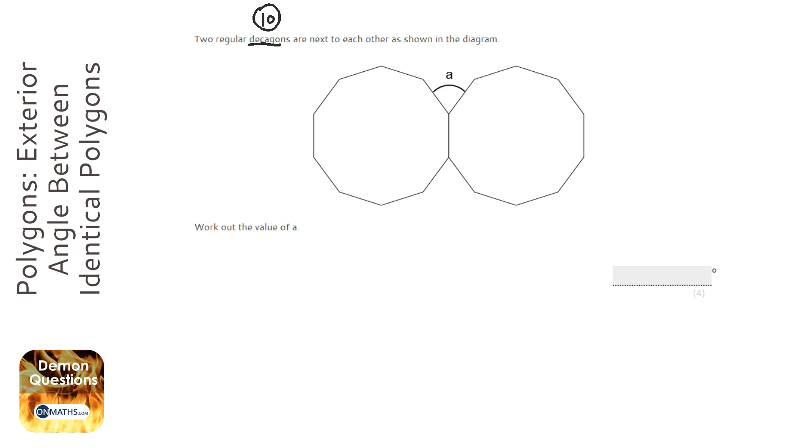A quicker way, especially on the non-calculator paper, but it works on both papers, is to draw a line up here and realize that you've got two exterior angles there. The beauty of exterior angles for polygons is they always add up to 360.